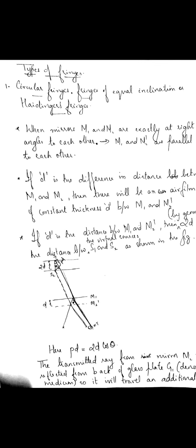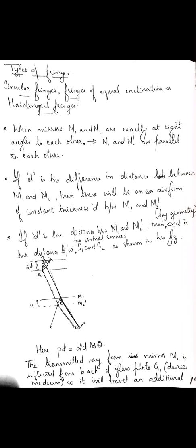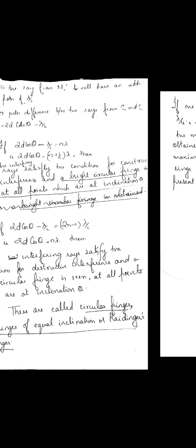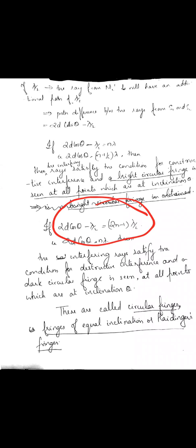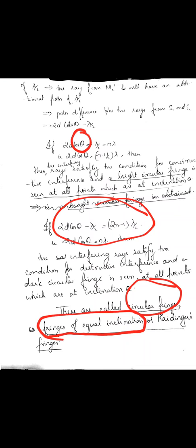You get a bright fringe having circular shape if the condition 2d·cos θ − λ/2 = (2n−1)·λ/2 is satisfied; and you get dark circular fringes when the destructive interference condition is satisfied. These circular fringes are also called fringes of equal inclination because the fringe corresponds to a constant angle θ. These fringes are also observed in Michelson's interferometer.